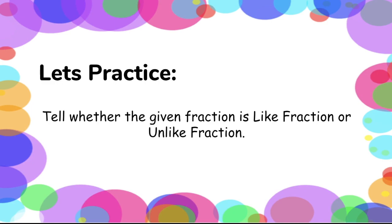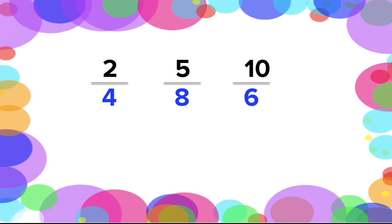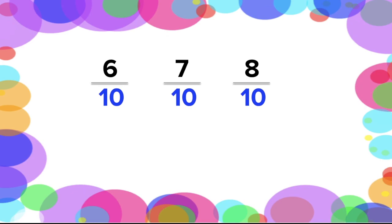Now let's have a quick practice. Tell whether the given set of fractions is like fraction or unlike fraction. For our first given, it shows different denominators, so this is unlike fraction. Next, our set of fractions have the same denominators, so this is like fractions. For our last given, it still has the same denominators, so this is like fractions.